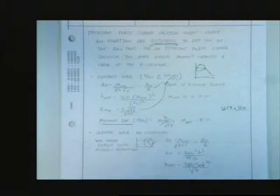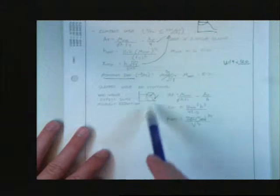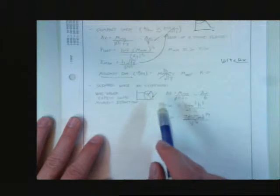is to use these equations to get yourself in the ballpark. Design something with a compact web, and a slender web with no stiffeners, or a non-compact web, and then a super slender web with stiffeners, okay?